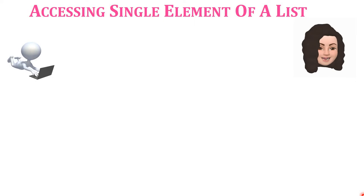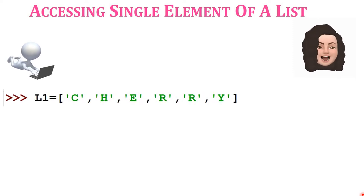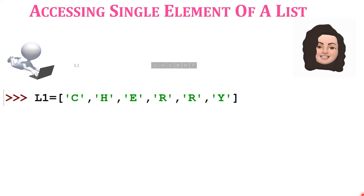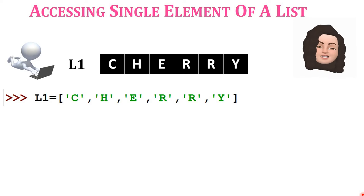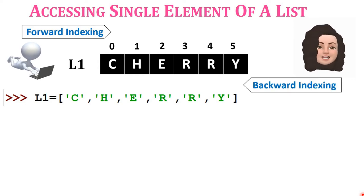To access a single element of a list, we use indexing. For example, L1 = ['C', 'H', 'E', 'R', 'R', 'Y']. Using forward indexing: 0, 1, 2, 3, 4, 5. Using backward indexing from the end: minus 1, minus 2, minus 3, minus 4, minus 5, minus 6.